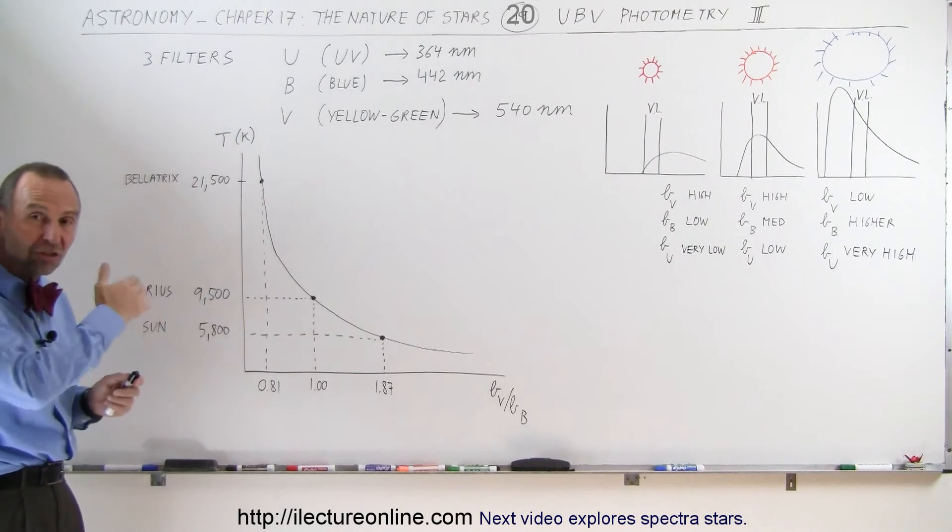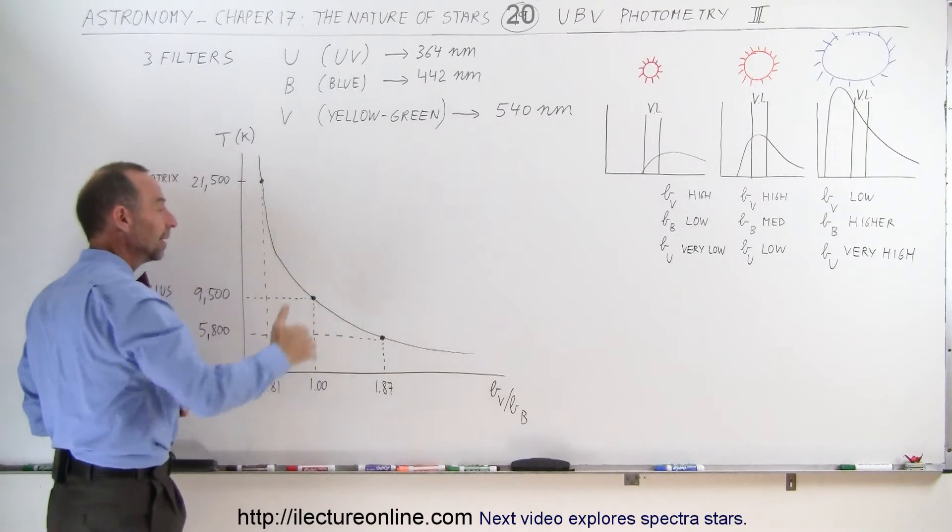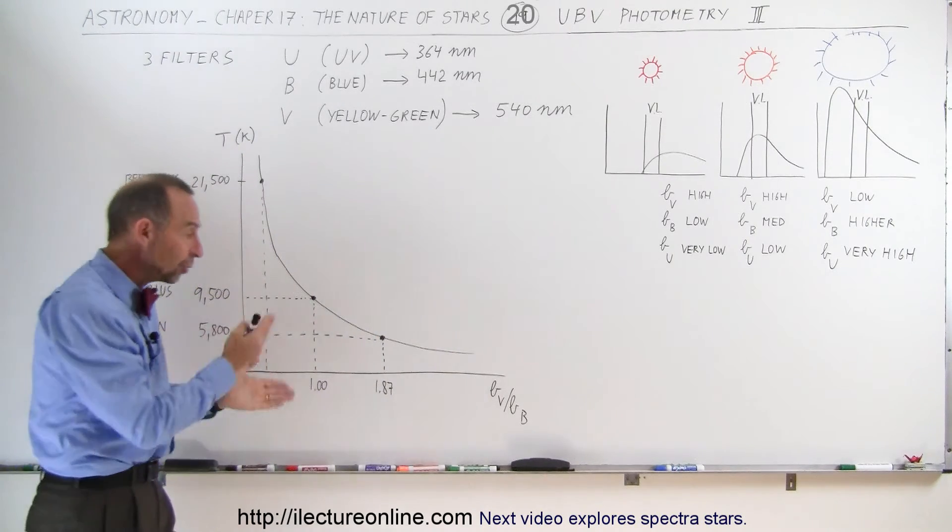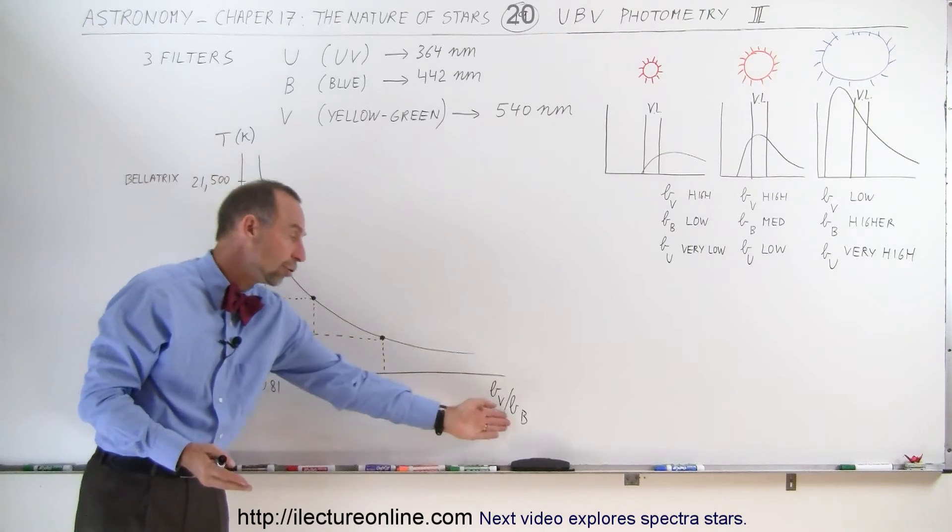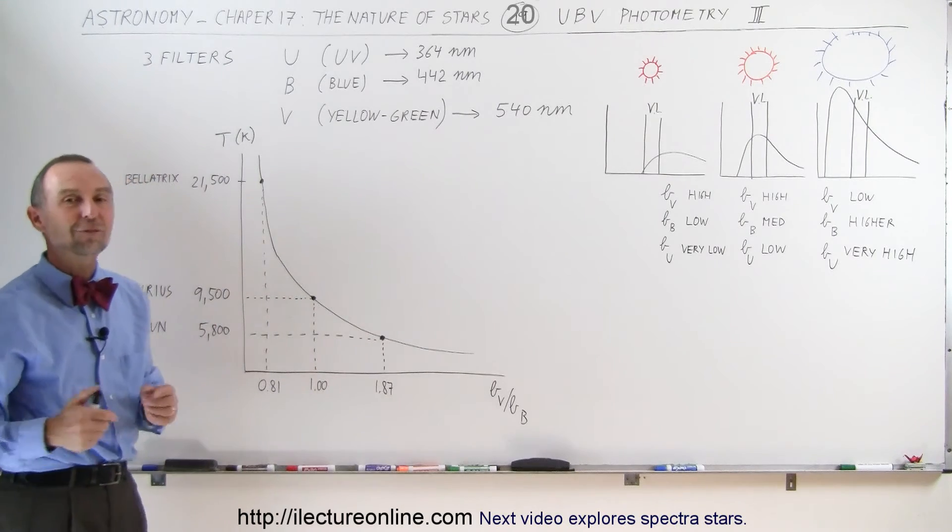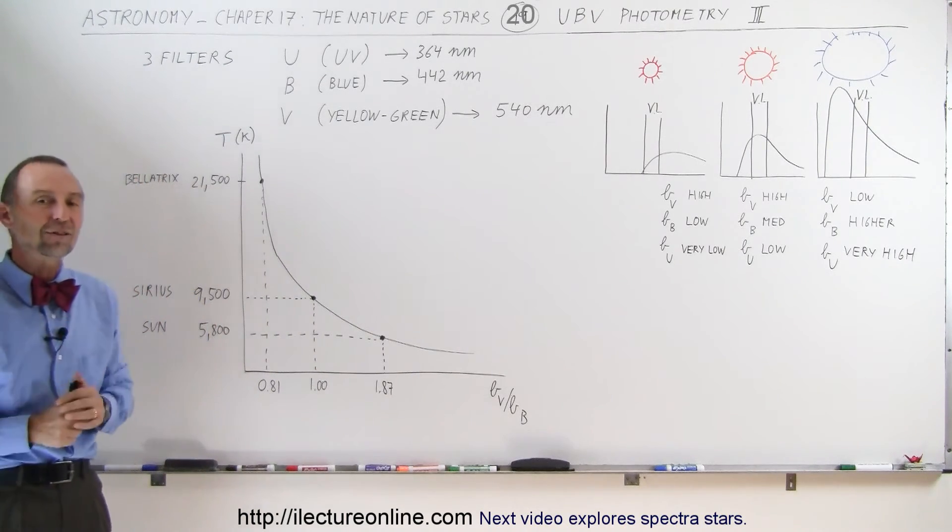Now, if we put a lot more stars in there, you can see that we come up with this very nice curve right here. And so that makes it really easy in the future to look at any star, find the ratio in the brightness of visible light to blue light, find the location on that curve, and then we have the associated surface temperature along with that and the specific color that the star is at.